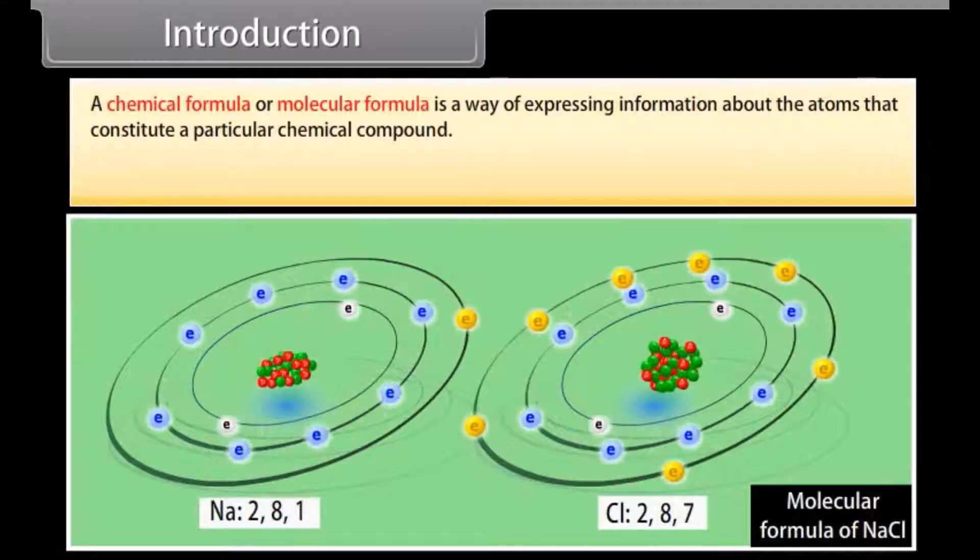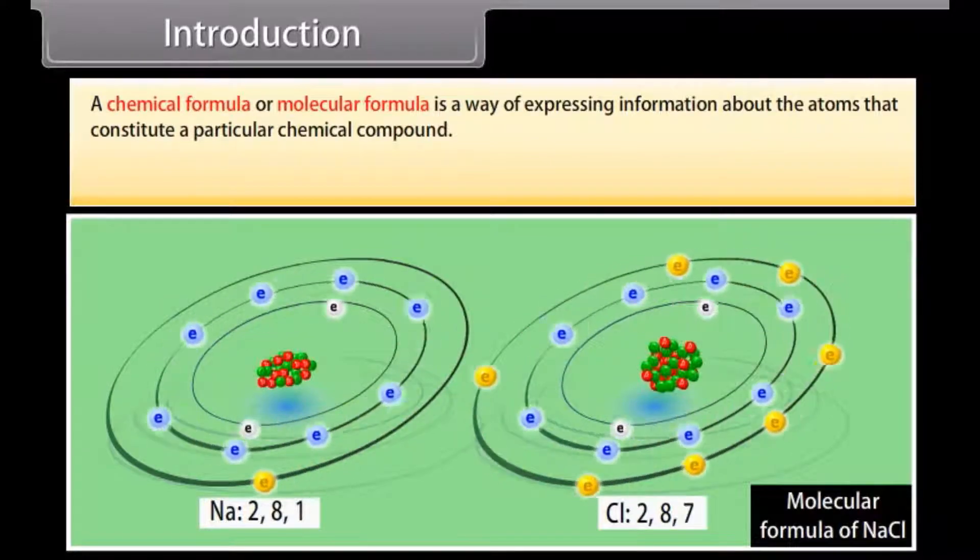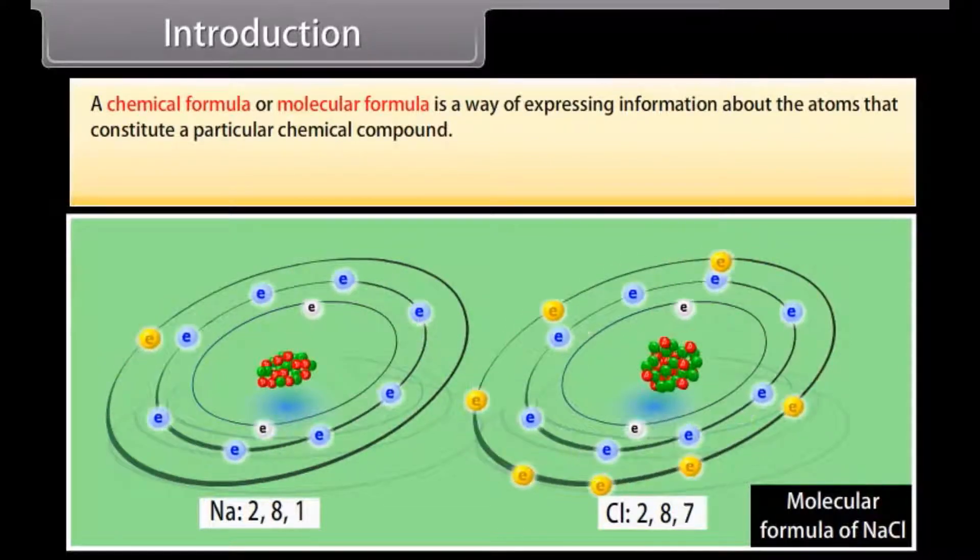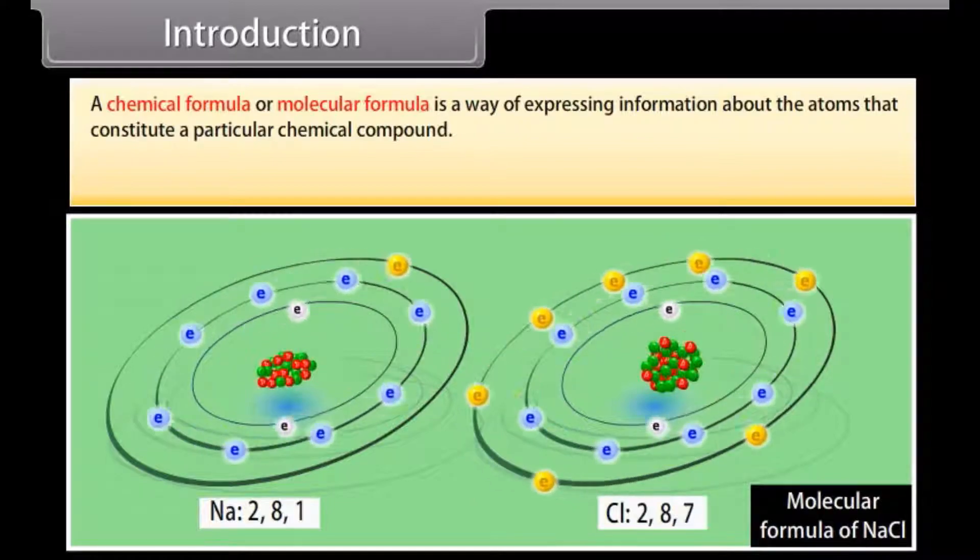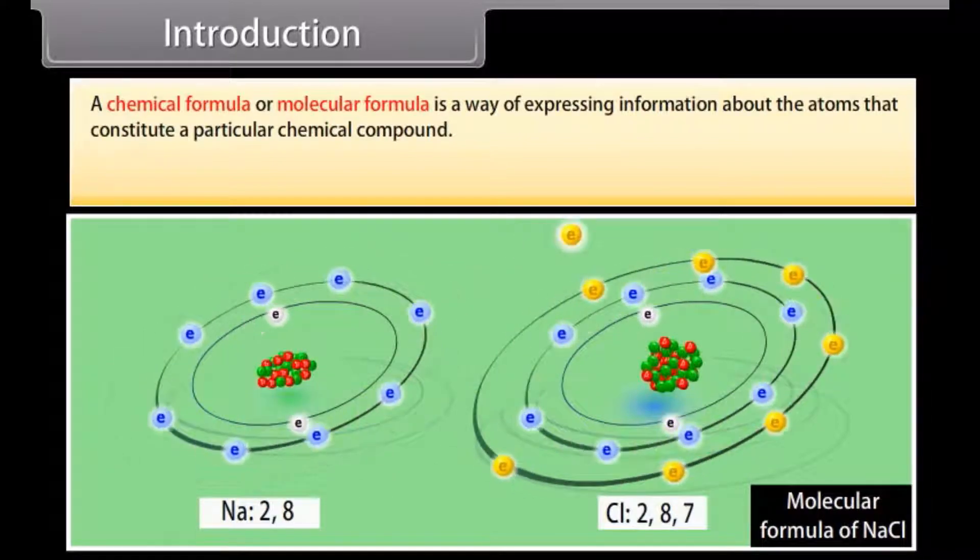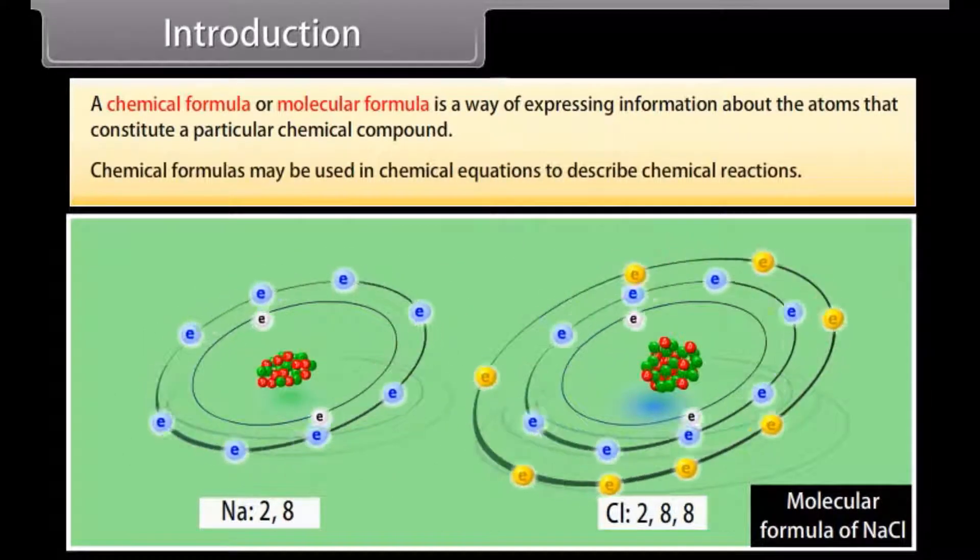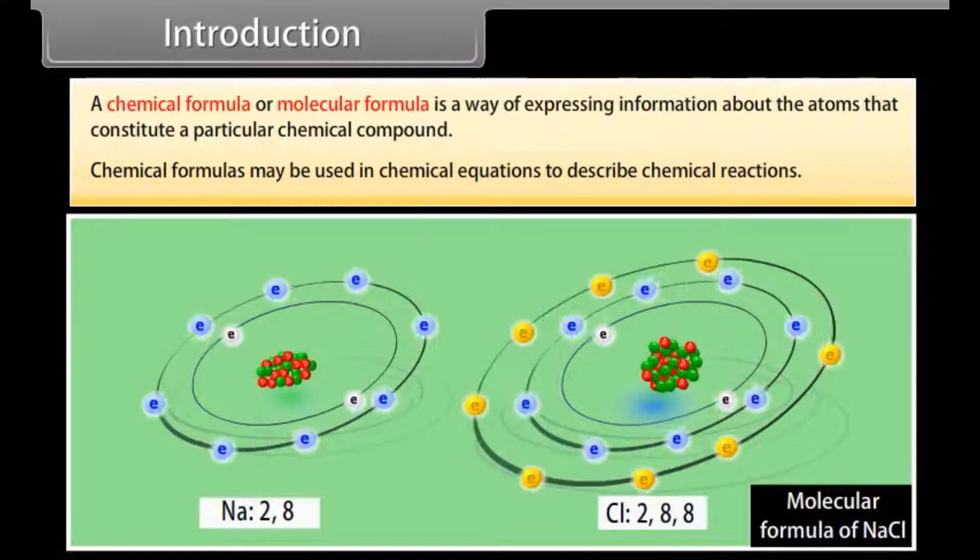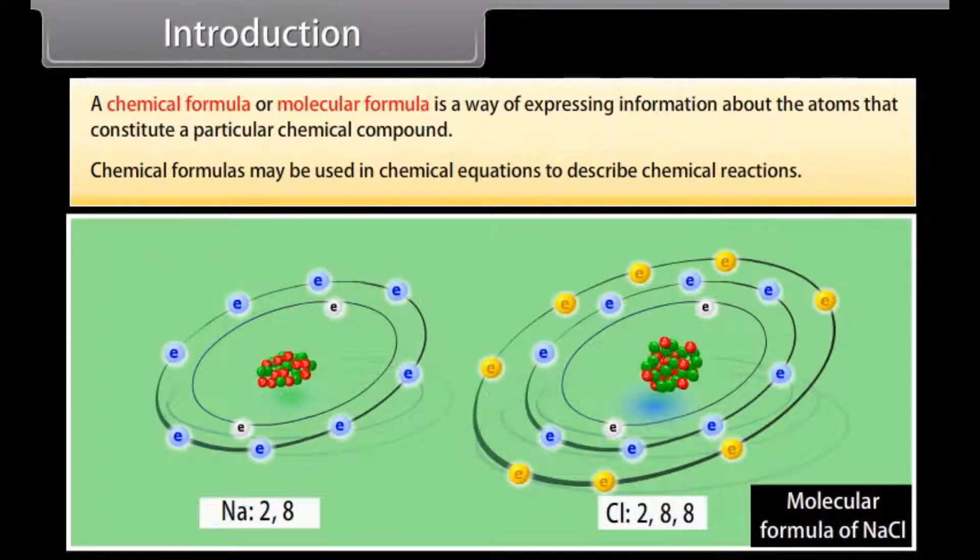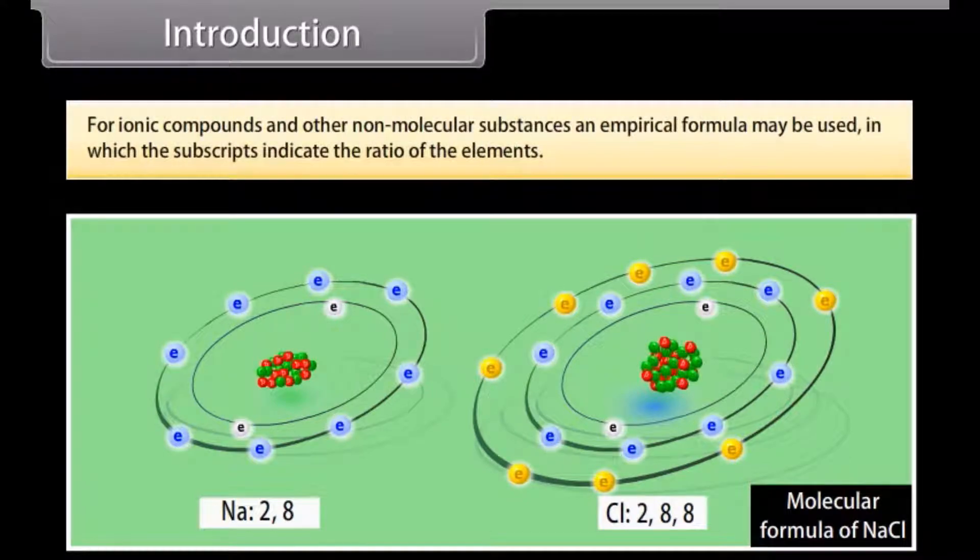A chemical formula or molecular formula is a way of expressing information about the atoms that constitute a particular chemical compound. Chemical formulas may be used in chemical equations to describe chemical reactions. For ionic compounds and other non-molecular substances, an empirical formula may be used in which the subscripts indicate the ratio of the element.